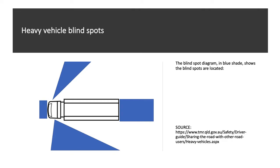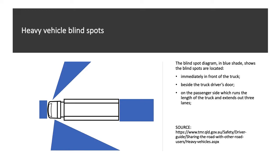The blind spot diagram on the left shows, shaded in blue, the blind spots located immediately in front of the truck, beside the truck driver's door, on the passenger side which runs the length of the truck and extends out 3 lanes, and directly behind the truck.